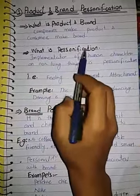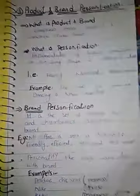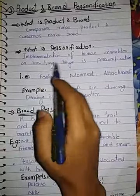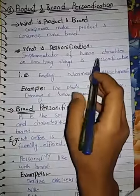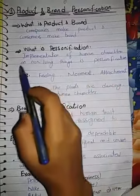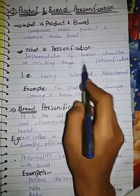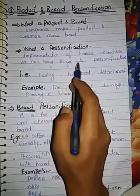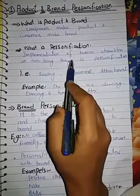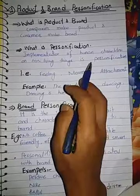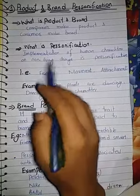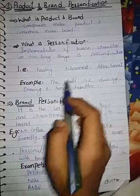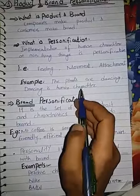Now I would talk about what is personification. Implementation of human character on a non-living thing is personification. Applying any human character to any non-living thing — that is personification. For example, plants are dancing; dancing is a human character.